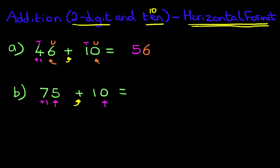So 7 becomes 8, and the 5 remains 5. 75 plus 10 is 85.